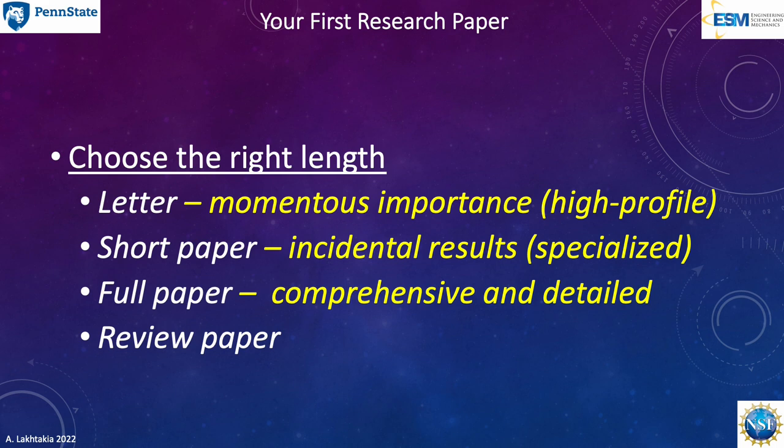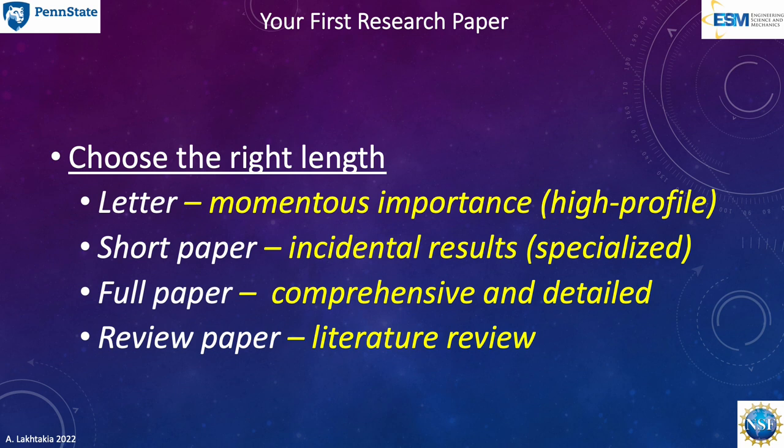A full paper is a comprehensive paper. It contains details that may not be available elsewhere. Generally, a full paper must contain enough detail for researchers with some experience to understand it without having to look at related literature. Finally, review papers contain an exhaustive review of a certain topic. The coverage depends on the level of maturity of that topic.